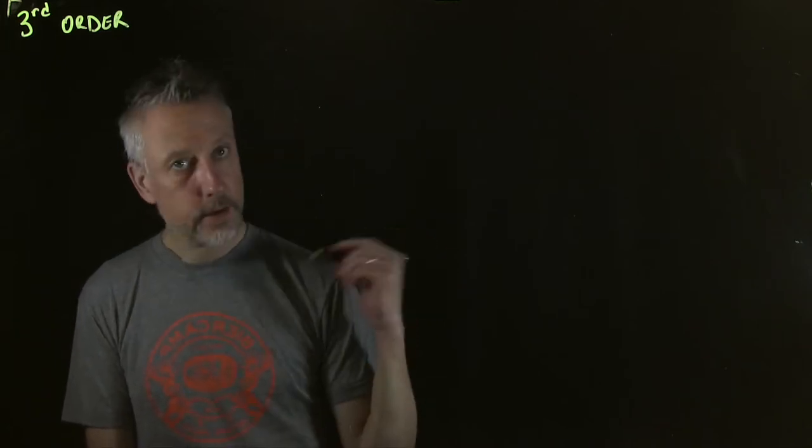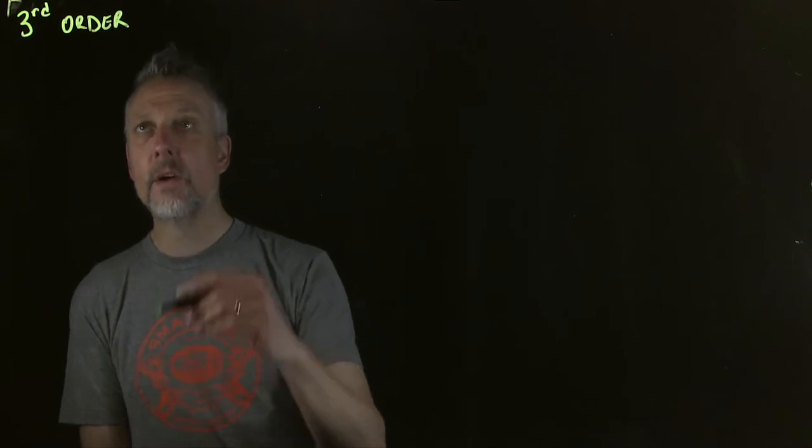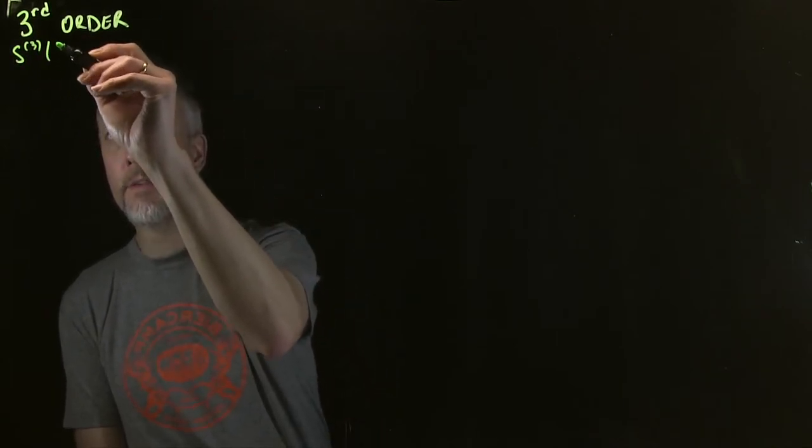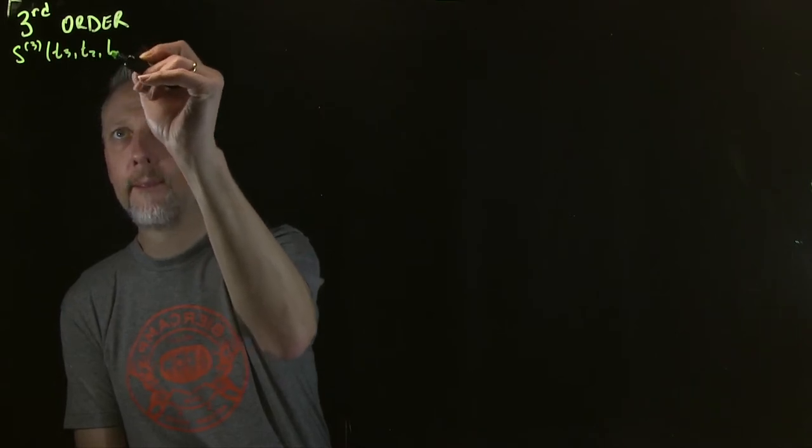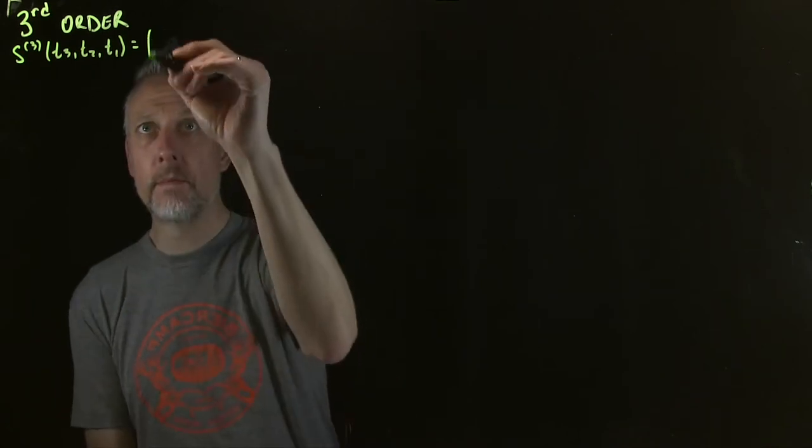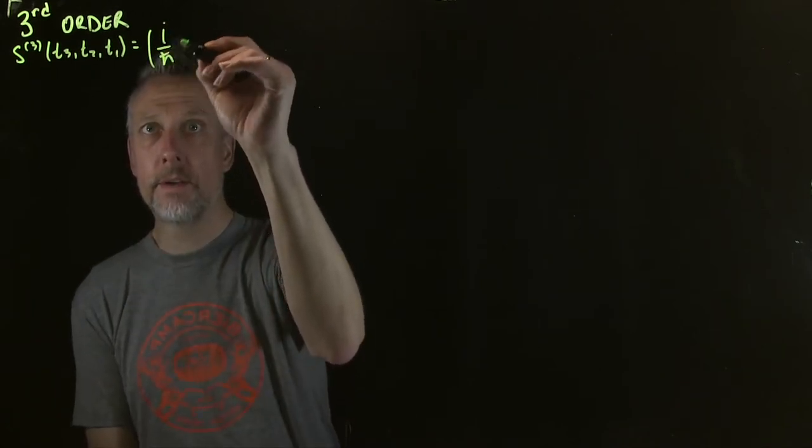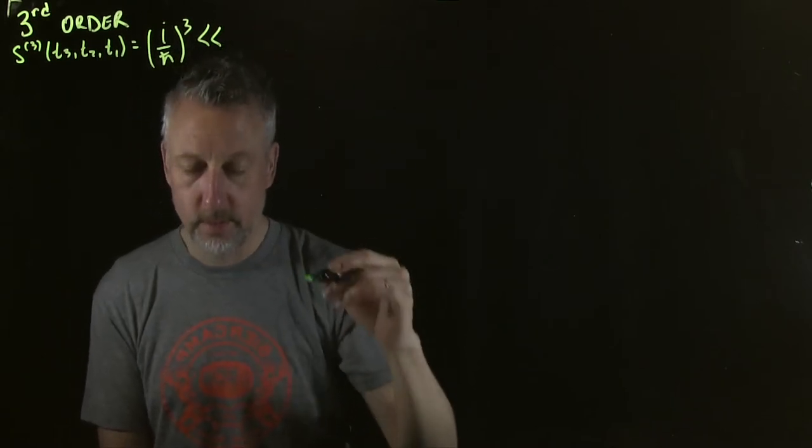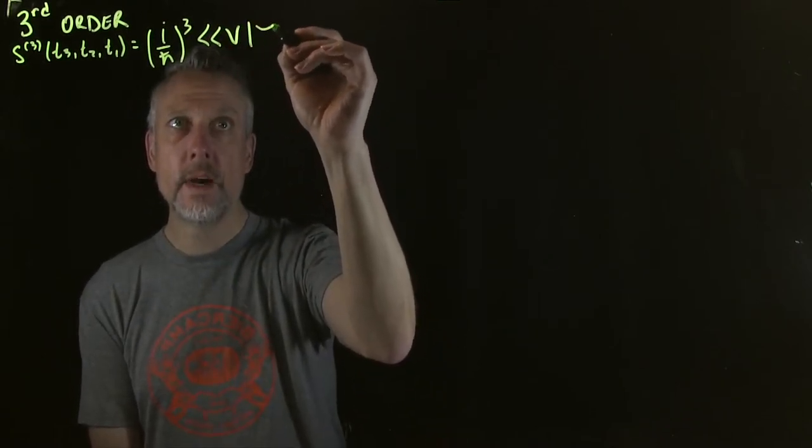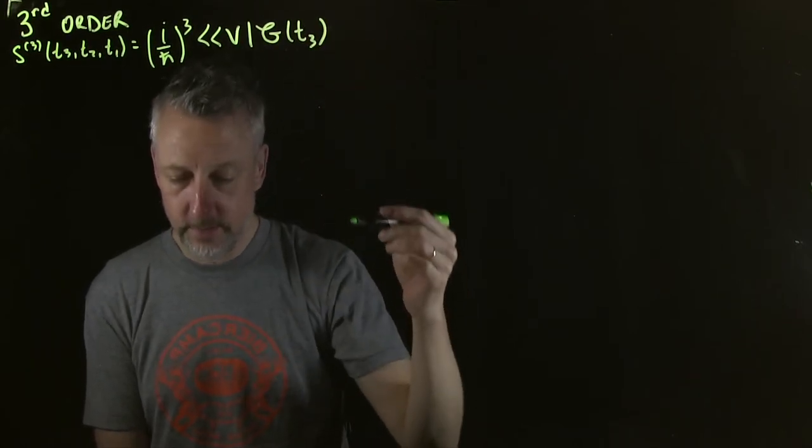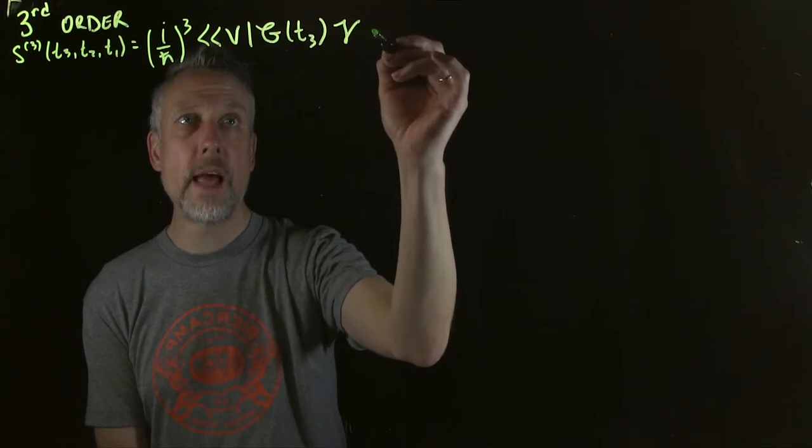Okay, so we're going to do the same procedure that we've done over and over again. So, we write down S3. Now, of course, there's three times, right? And I'm just going to cut the chase on this one as well, similar to how I did on the second order one, where we have our G's. But if you like, if you like filling in the details, it's straightforward, and it's kind of relaxing.